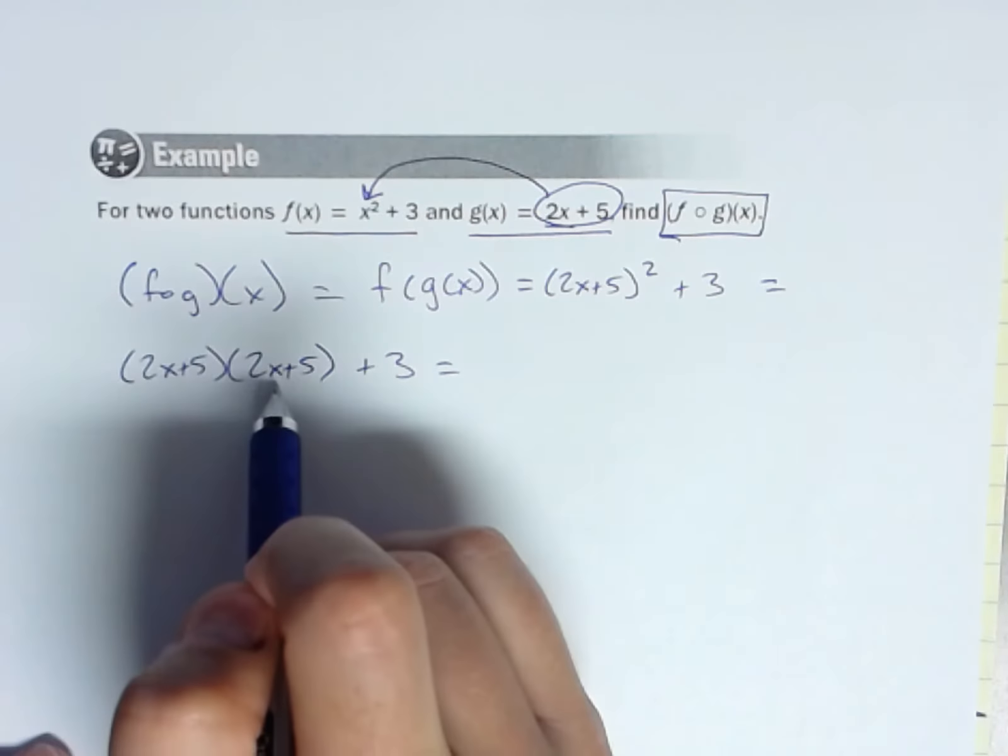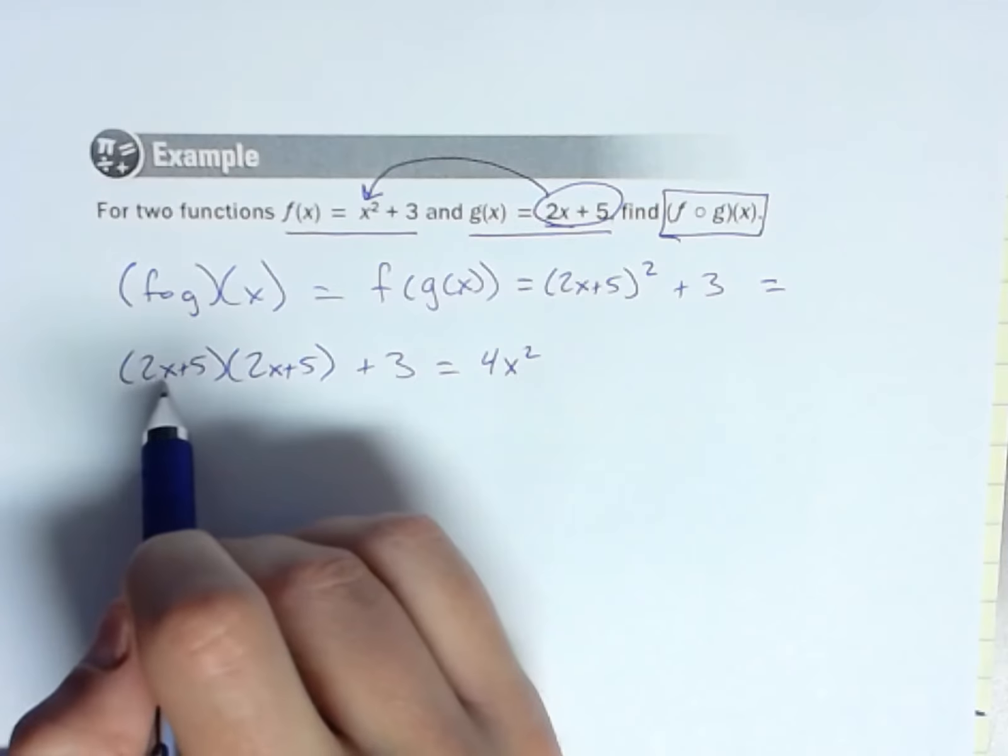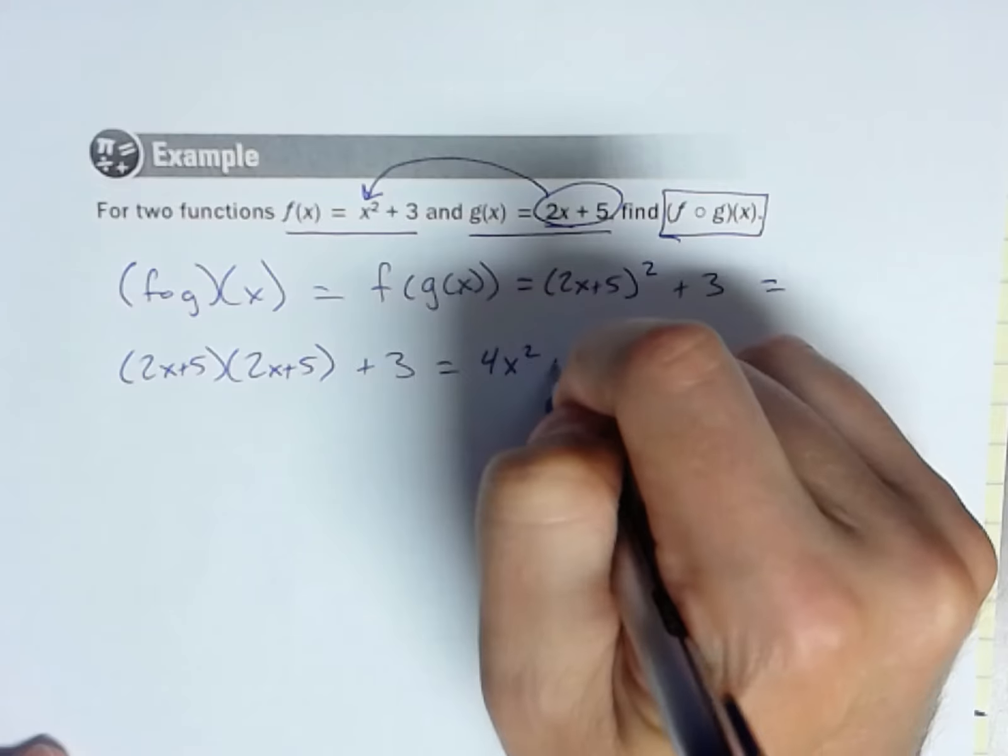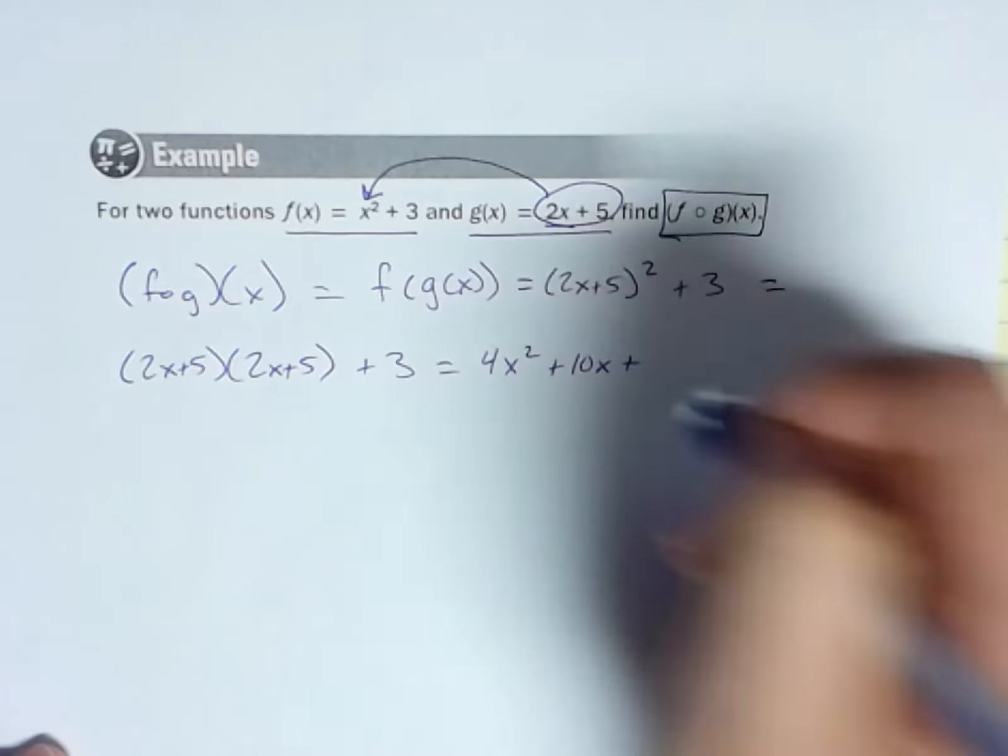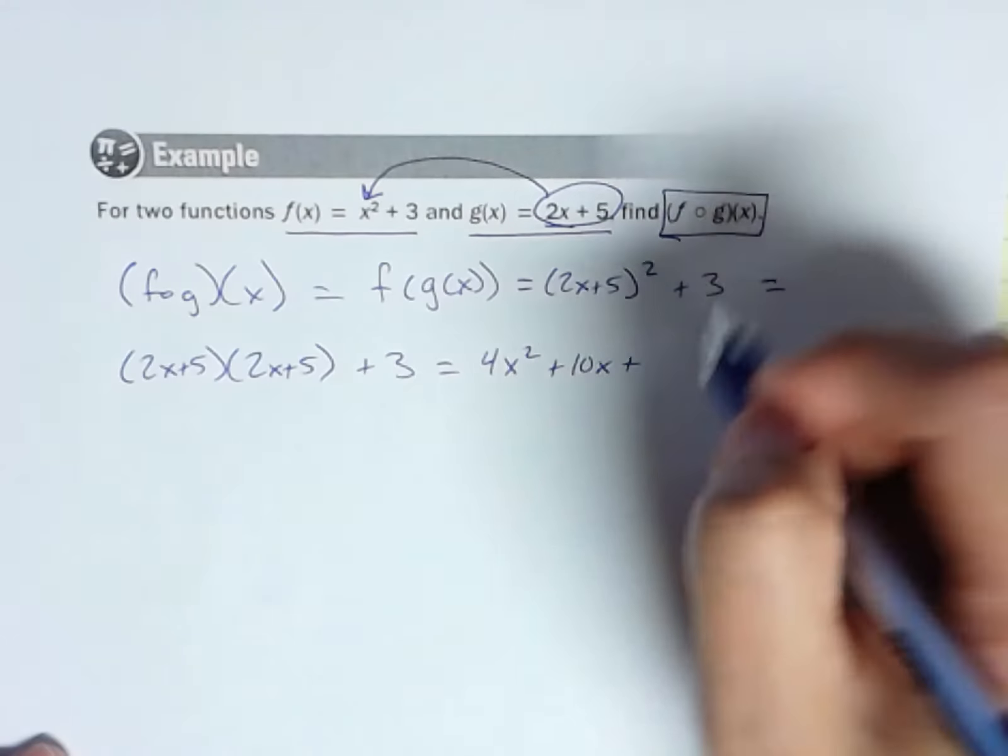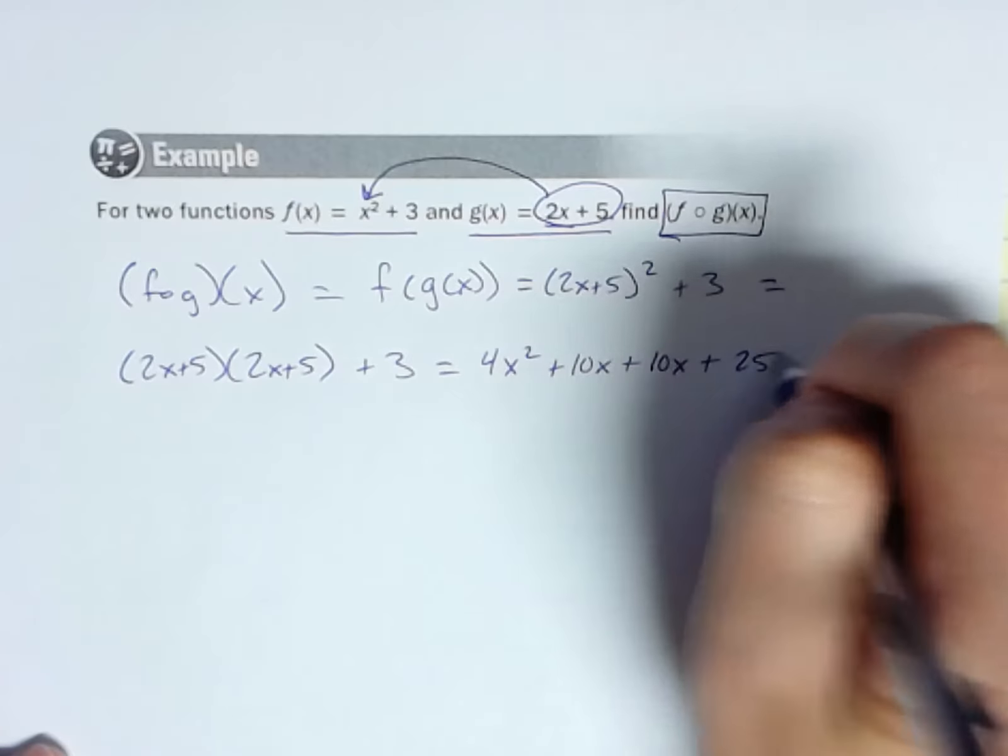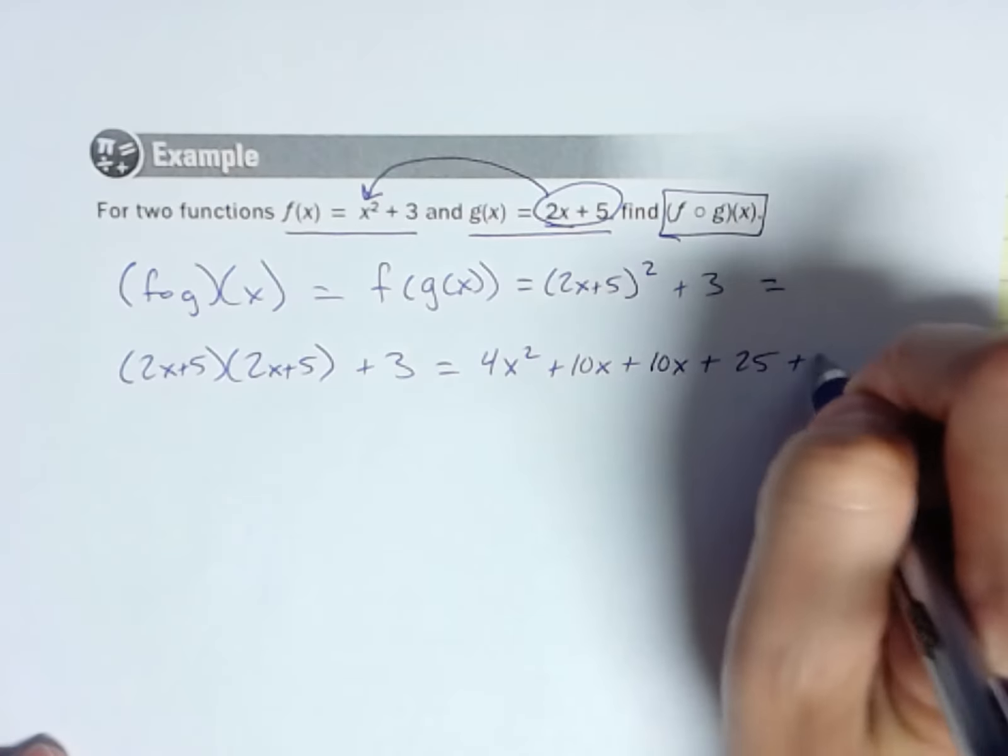So if I take my 2x times 2x, I get 4x squared. 2x times 5, so plus 10x. Now I'm going to take my 5 through everything. So 5 times 2x is 10x again. Then 5 times 5 is plus 25, and then plus 3.